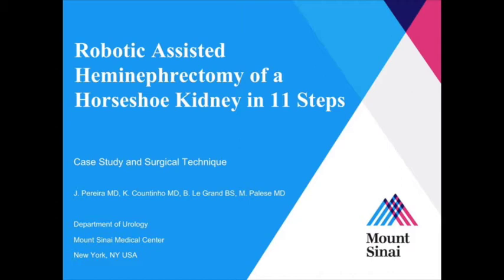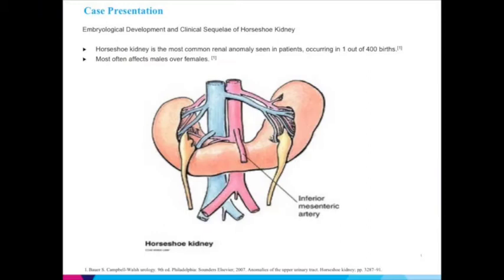In this video we will describe the surgical technique of a robotic-assisted hemi-nephrectomy for a horseshoe kidney, broken down into 11 steps. We will also briefly review the embryology and anatomy of a horseshoe kidney as it pertains to the surgical approach.